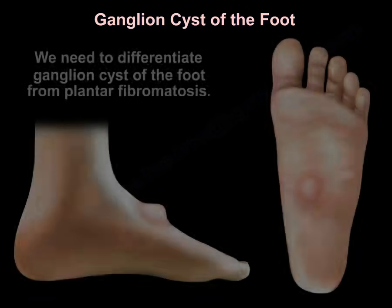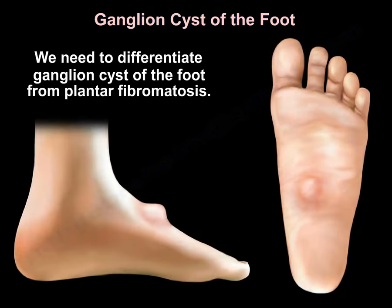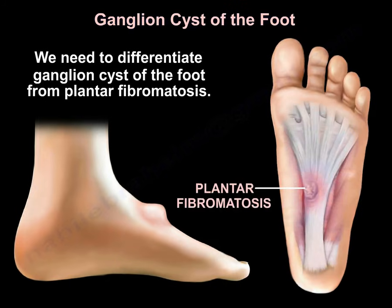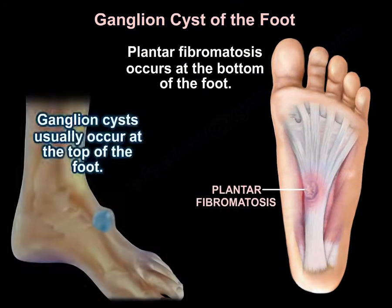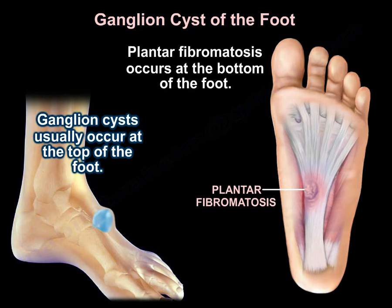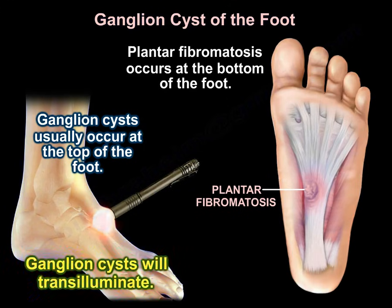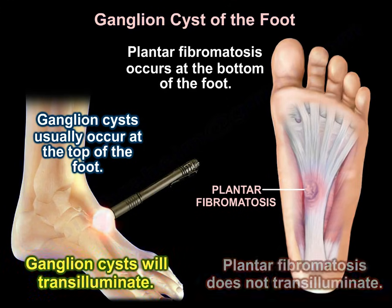We need to differentiate ganglion cysts of the foot from plantar fibromatosis. Plantar fibromatosis occurs at the bottom of the foot, whereas ganglion cysts usually occur at the top of the foot. Ganglion cysts will transilluminate, while plantar fibromatosis does not transilluminate.